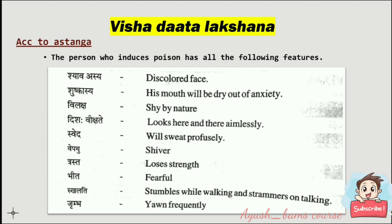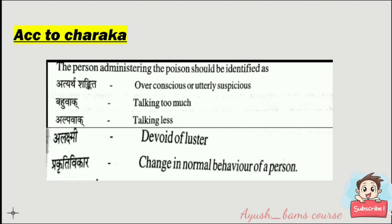Vishadata lakshana: according to Astanga, the person who administers poison has the following features — discolored face, dry mouth out of anxiety, shy by nature, looks here and there aimlessly, sweats profusely, shivers, loses strength, is fearful, stumbles while walking, and stammers. According to Charaka, the person administering the poison should be identified as over-conscious or utterly suspicious, talking too much or too little, devoid of lustre, and showing change in normal behavior.